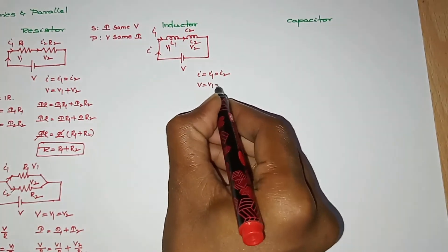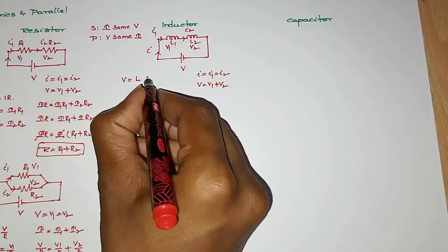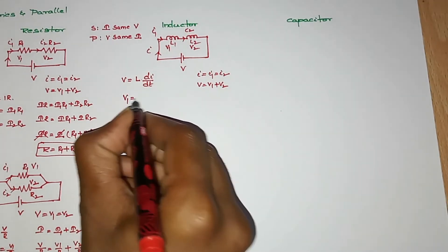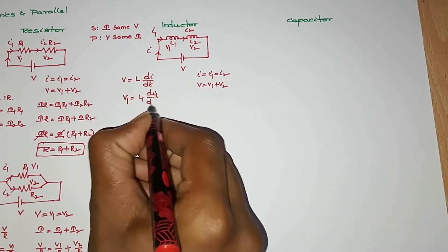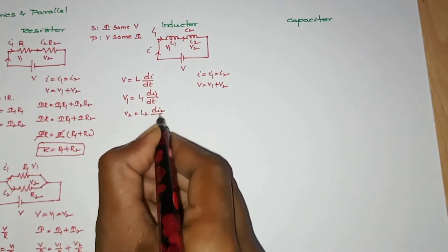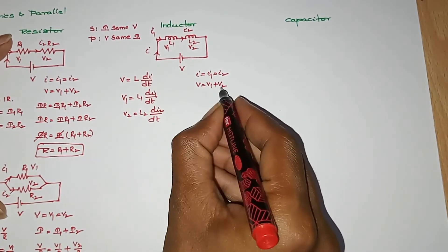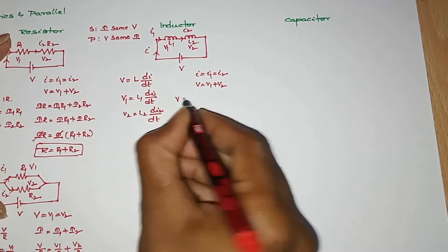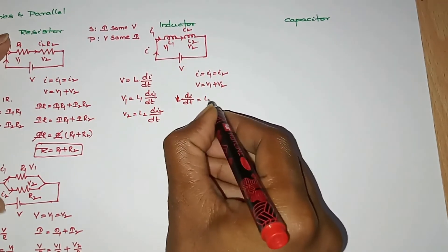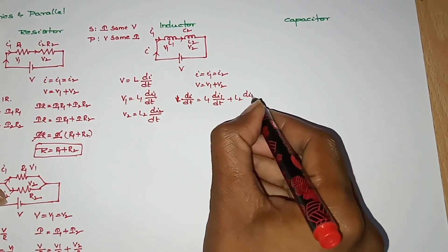For inductors in series connection: V equal to V1 plus V2. V1 is equal to L1 di by dt. V2 is equal to L2 di by dt. So V equal to L_eq times di by dt, which equals L1 di by dt plus L2 di by dt.